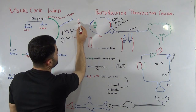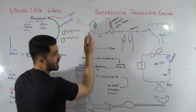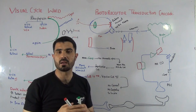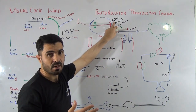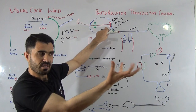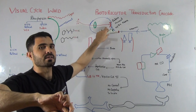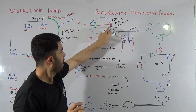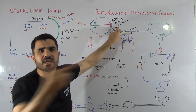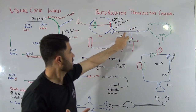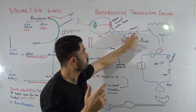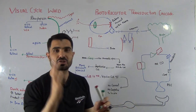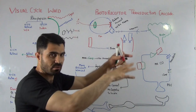For example, if you want to see a person, light is first reflected from that person, then it crosses the lens of your eye and strikes a very special membrane called the retina. The retina is specialized in capturing light and converting it into an electrical signal or current. Photoreceptors are present in the retina, and once a small current is produced, it travels via the optic nerve to the brain, where the image is registered.